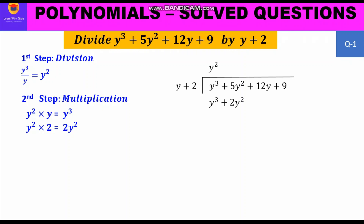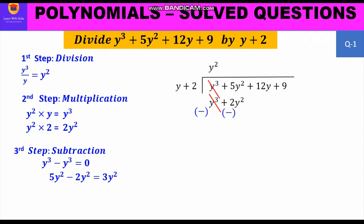Now the third step — subtraction. We change the signs: +y³ becomes −y³, and +2y² becomes −2y². Subtracting: y³ − y³ = 0, and 5y² − 2y² = 3y². We then bring down 12y to form the new dividend: 3y² + 12y.